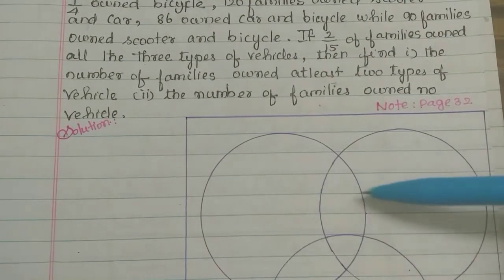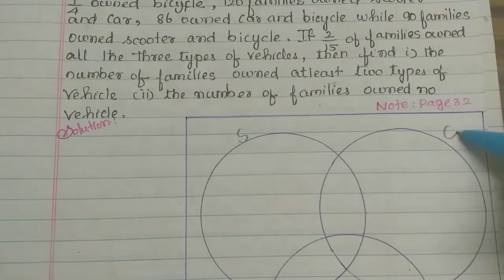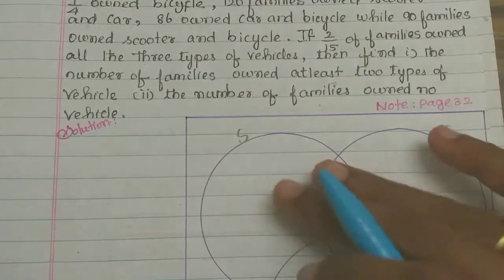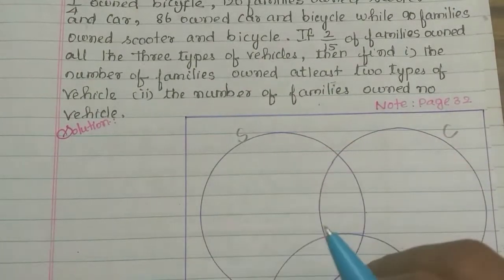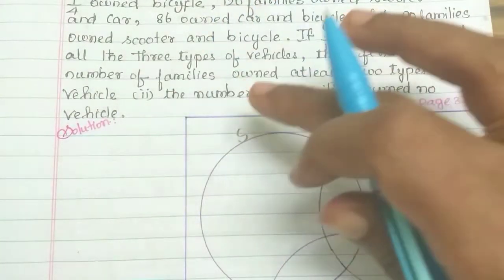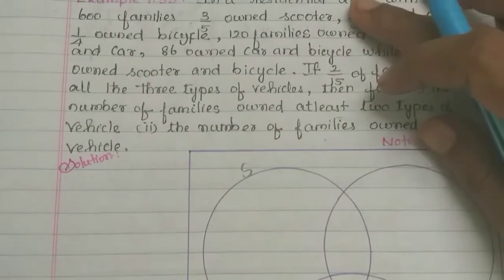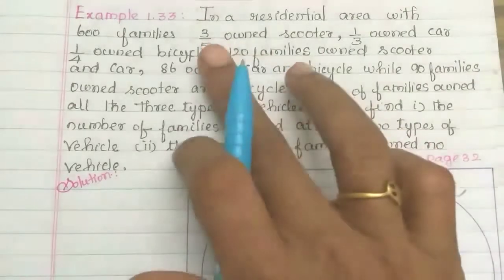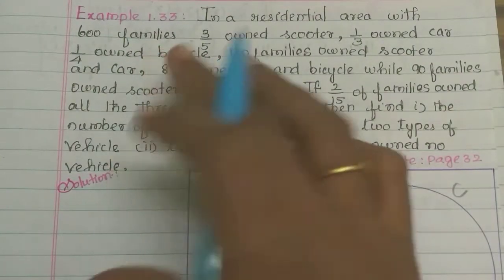If you have 3 sets, you can choose scooter, car, and bicycle. You can draw 3 circles. You draw the universe in a box. Now you can mark the information in the diagram. The residential area with 600 families — so 600 families are the universe.